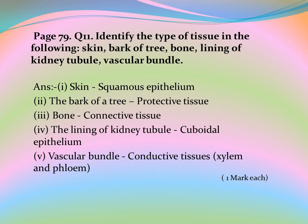Page 79, Question 11: Identify the type of tissue in the following. A. Skin — squamous epithelium. B. Bark of tree — protective tissue. C. Bone — connective tissue. D. Lining of kidney tubule — cuboidal epithelium. E. Vascular bundle — conductive tissue, that is xylem and phloem.